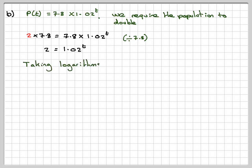Therefore, if we take logs, and we can take to any base, I'm just going to take to the base 10 of both sides. So we've got log₁₀(2) = log₁₀(1.02^T).